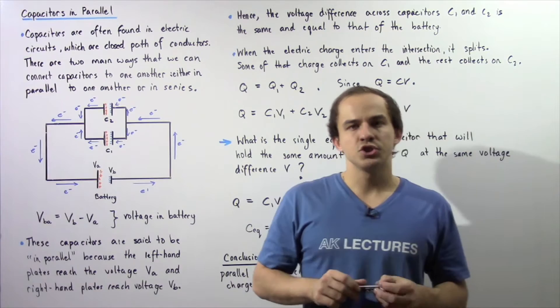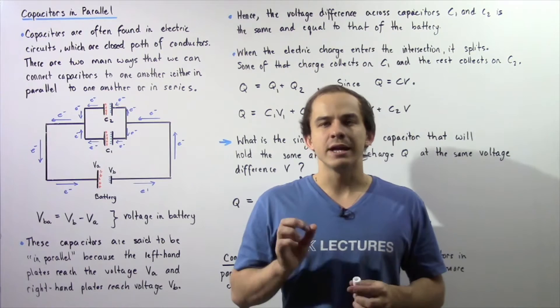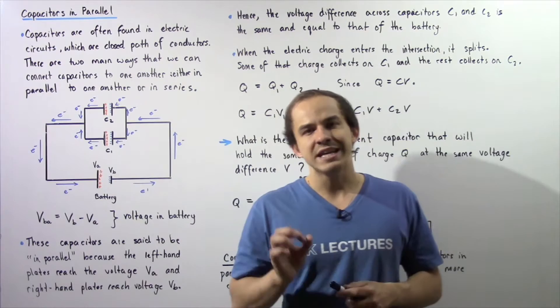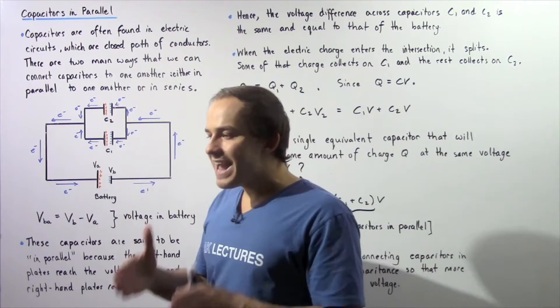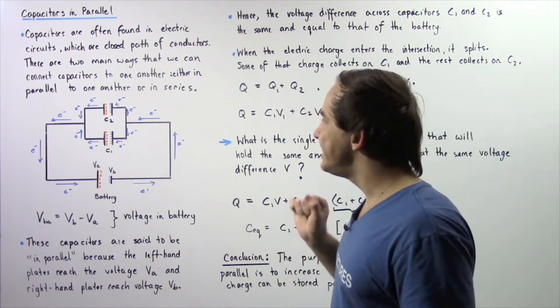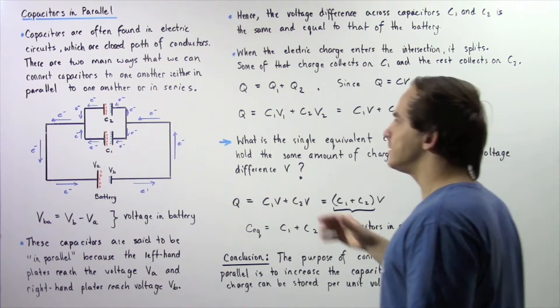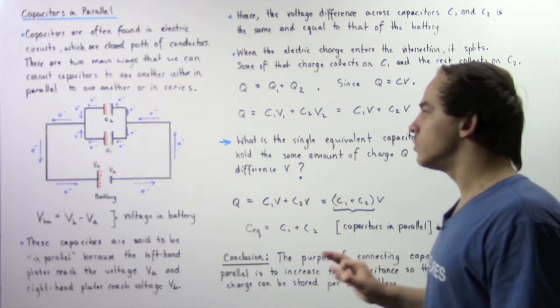Capacitors are essentially devices that allow us to store electric charge. Capacitors are generally found within electric circuits, which are closed pathways that consist of conducting wires in which electrons are able to flow from one location to another. Capacitors can be connected relative to one another in two main ways: they can either be connected in parallel or in series within a circuit.